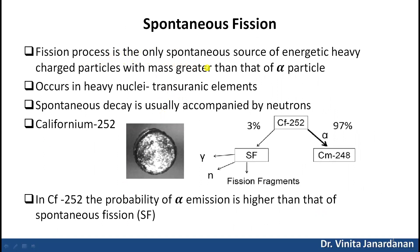Fission is the only spontaneous source of energetic heavy charged particles with mass greater than that of alpha particles. All heavy nuclei are unstable against spontaneous fission into two lighter fragments, and spontaneous decay is usually accompanied by the emission of neutrons. The most widely used example is californium-252, in which the probability of alpha emission is higher than that of spontaneous fission.